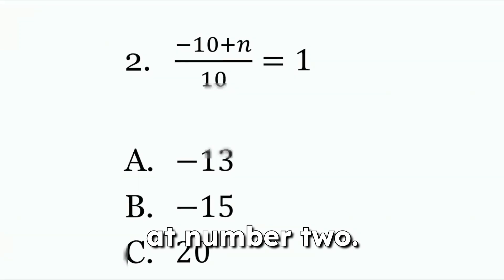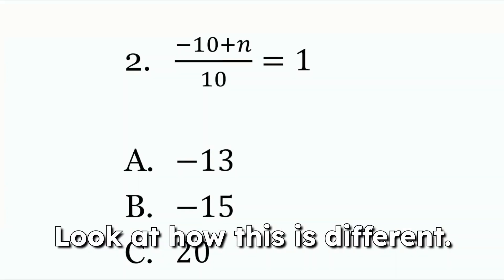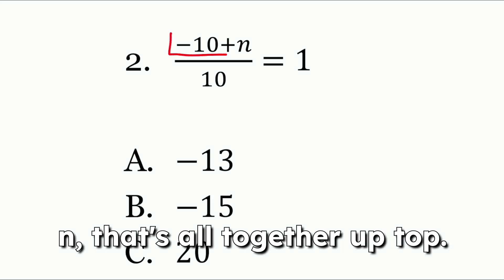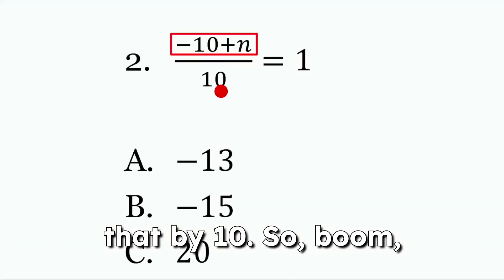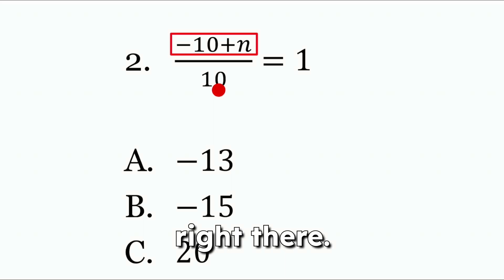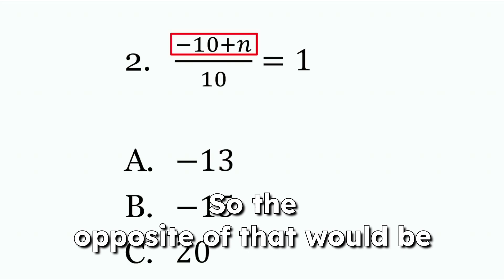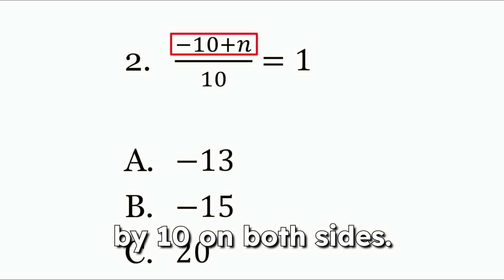So let's take a look at number two. We have a negative 10 plus N, all of that divided by 10. Look at how this is different. Notice how the negative 10 plus N, that's all together up top and we're dividing all of that by 10. So boom, there's our last step right there. We're dividing the entire thing by 10. So the opposite of that would be multiplying everything by 10 on both sides.